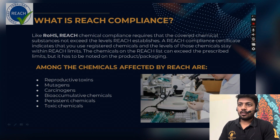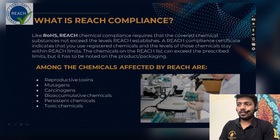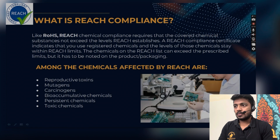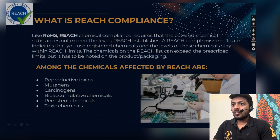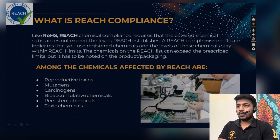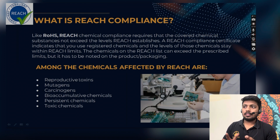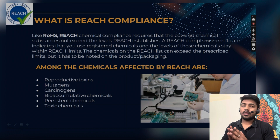As you can see on the screen, among the chemicals affected by REACH are: reproductive toxins, mutagens, carcinogens, bioaccumulative chemicals, persistent chemicals, and toxic chemicals. These are all hazardous and dangerous to human life and the environment. Mutagens and carcinogens are especially dangerous for human health — mutagens can cause mutation in the human body — which is why they are restricted under REACH.